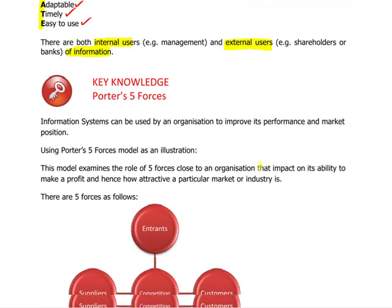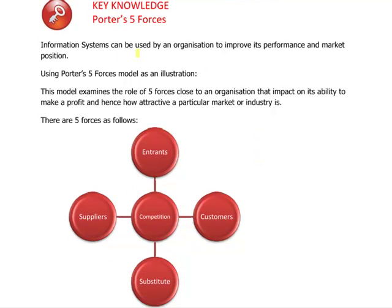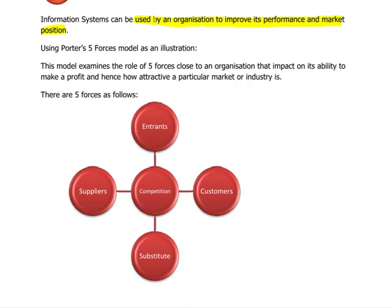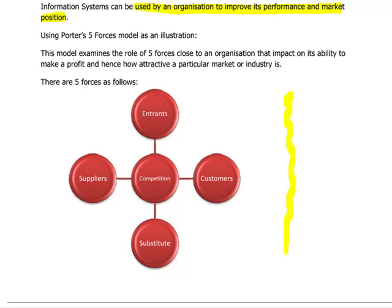So what can we use all this information for? Information systems can be used by an organization to improve its performance and market position. I'm going to link in with one of the more well-known business models - Porter's Five Forces - and use this as an illustration of what we can do with the information we've obtained. Porter's Five Forces model by Michael Porter, as the name suggests, has five forces on a particular organization.